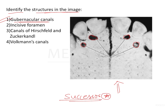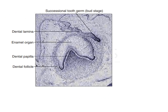Gubernacular canals are the remnants of the gubernacular cords. To understand this, we first need to understand how tooth development takes place, especially for successional teeth. The tooth develops from its tooth germ from the dental lamina. Those teeth that have a successional tooth — for example, a deciduous central incisor has a successional permanent central incisor — develop from an offshoot of the dental lamina which also contains the primary tooth bud. This offshoot is the successional tooth germ, which develops into the permanent incisor.